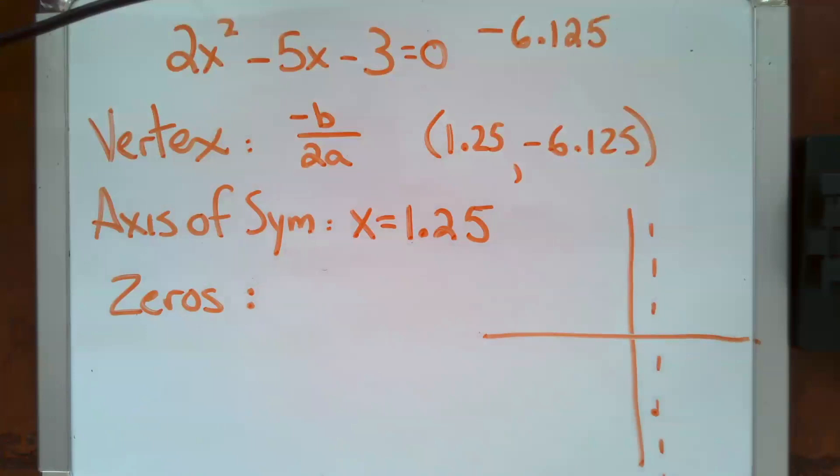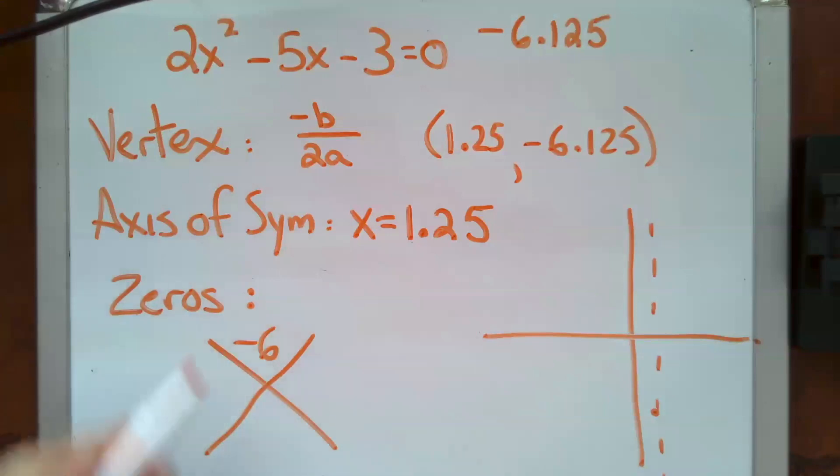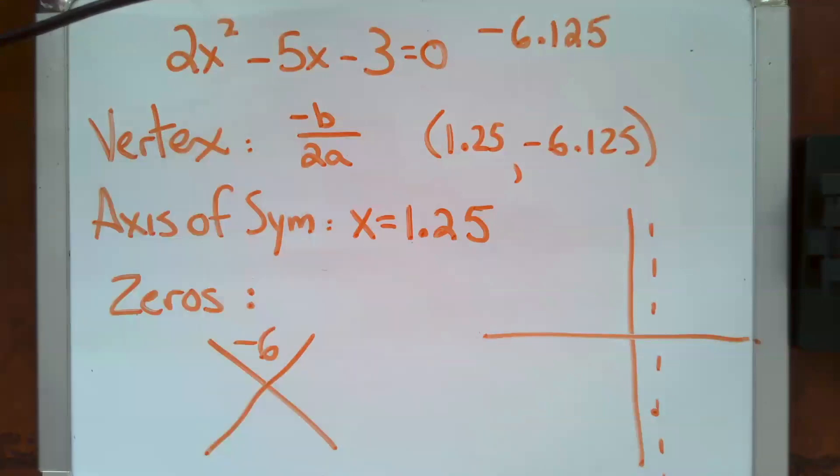So I'm going to choose to go ahead and factor using the x method. If this is not familiar to you, take a moment and take a look at this video. But otherwise, we're going to continue. So I know that what goes up here is a times c, so that's negative 6. And I know what goes down here is my b, so that's negative 5. And now I'm asking the question, what multiplies to negative 6, but adds to negative 5. So that's going to be a negative 6 and a 1.